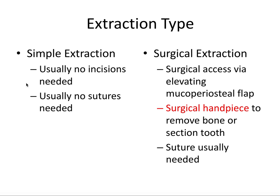Let's talk about the differences briefly between a simple and a surgical extraction. As far as coding for procedures, there is a distinct difference between simple and surgical extraction. Simple extractions usually require no incisions and hence no sutures. While surgical extractions typically involve a surgical access via elevating a mucoperiosteal flap, and for flaps the same rules apply that we talked about in the periodontics videos: a wide base to maintain vasculature, cut to the line angles of teeth, make the flap sufficiently large so you can get good access and visibility. We'll talk about those in detail in the next video.